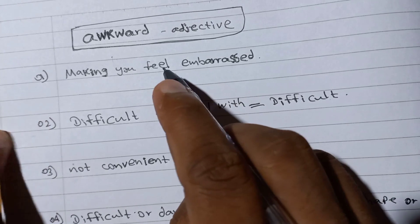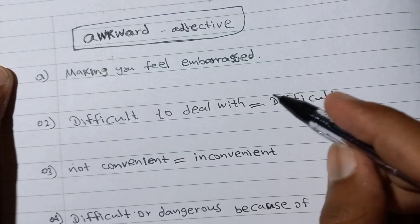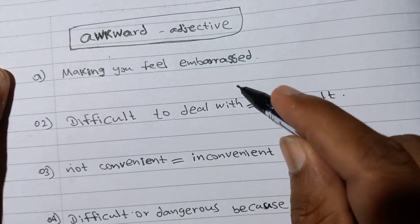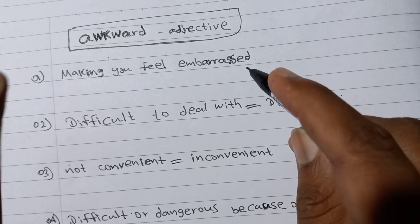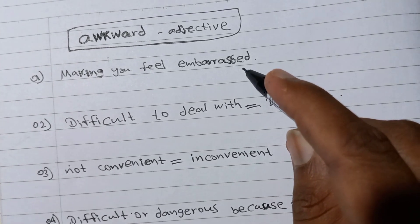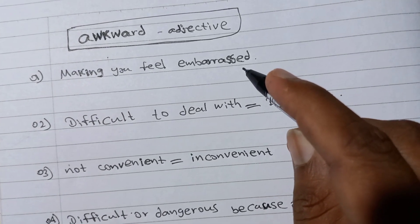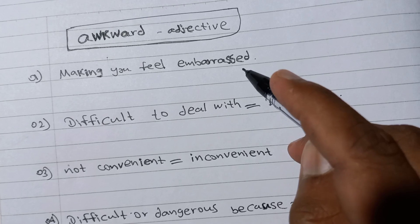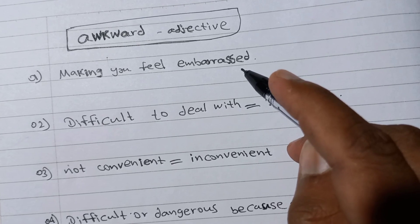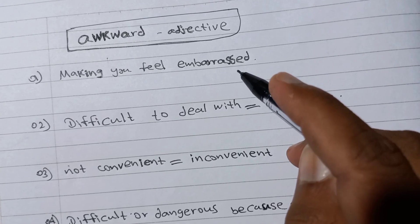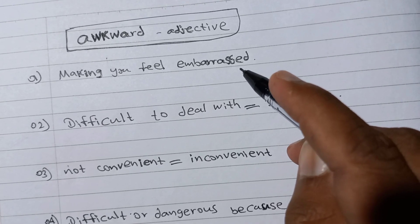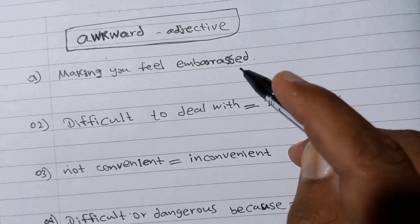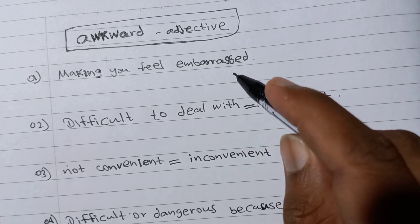Adjective. There are some meanings of awkward. The first meaning of awkward is making you feel embarrassed. That means something that makes you feel embarrassed.